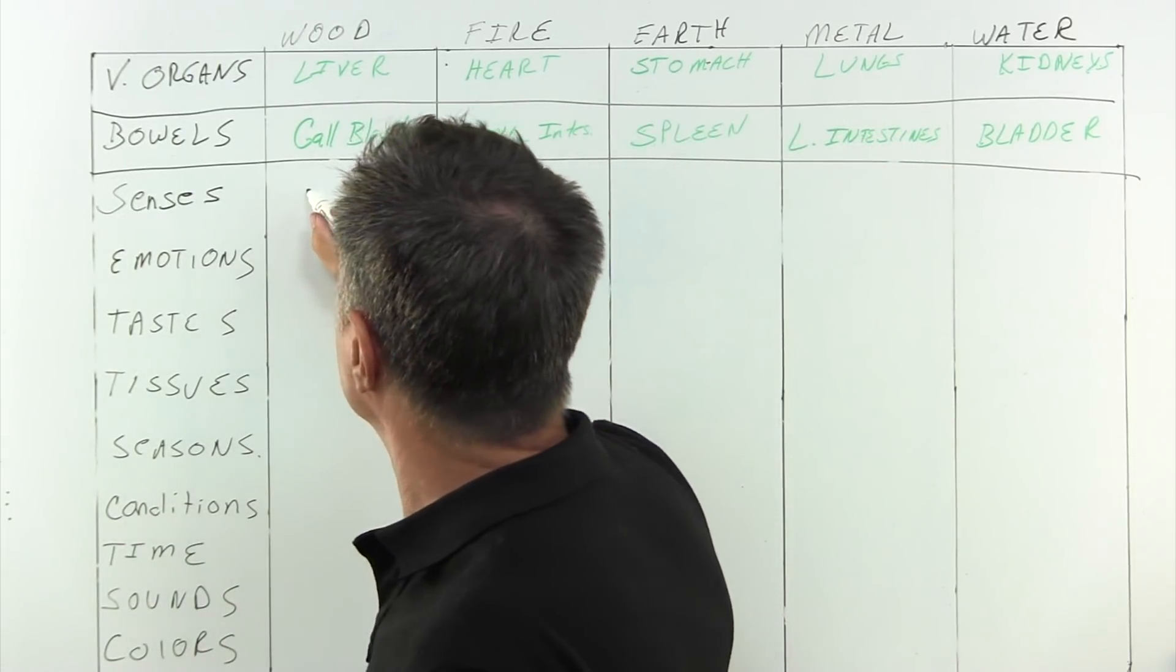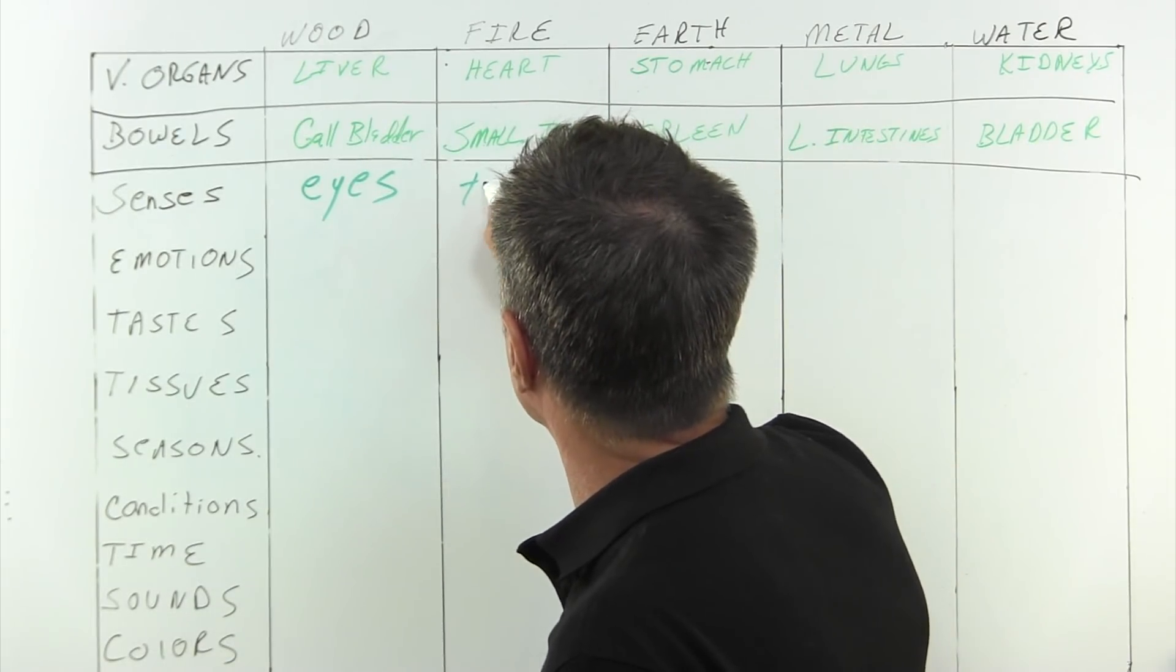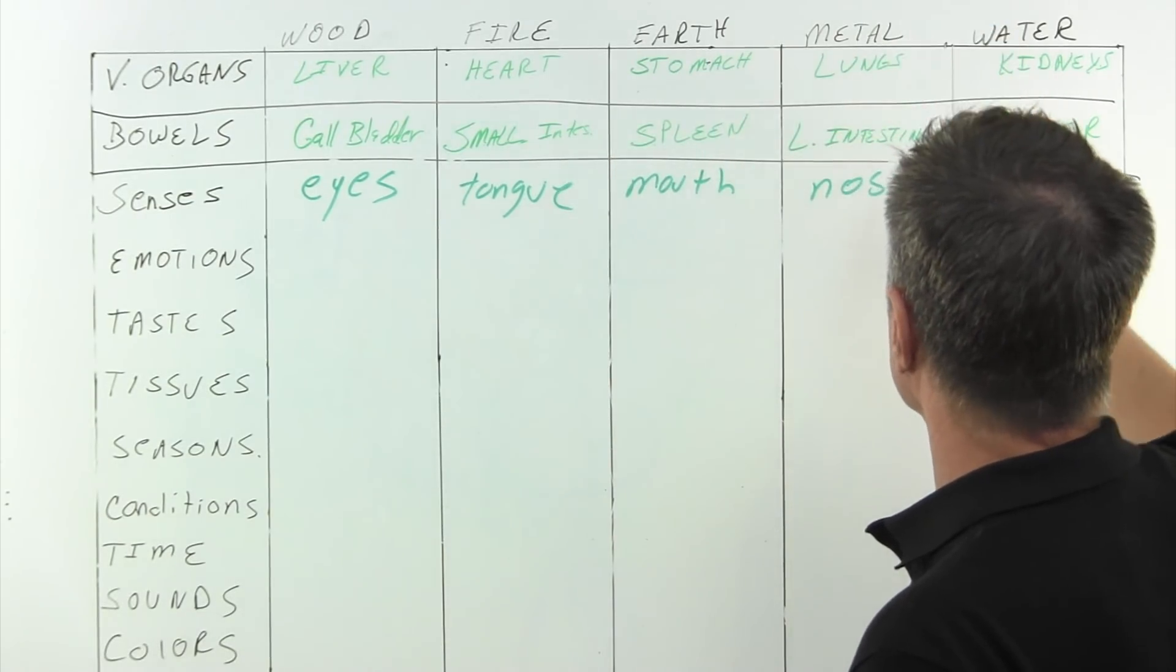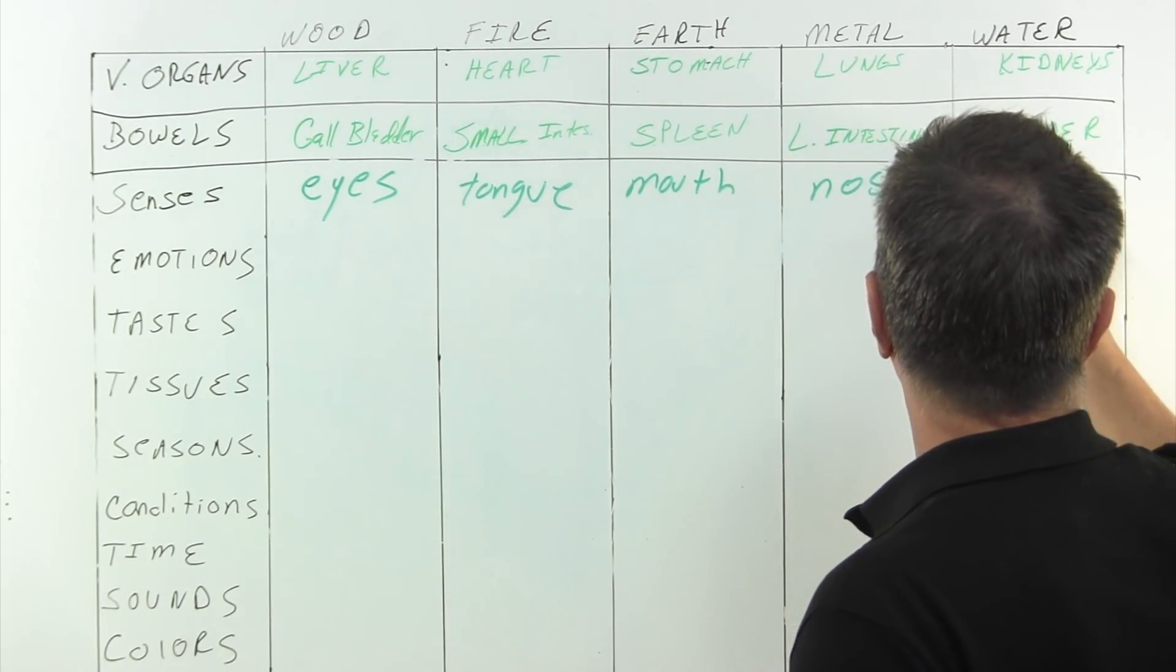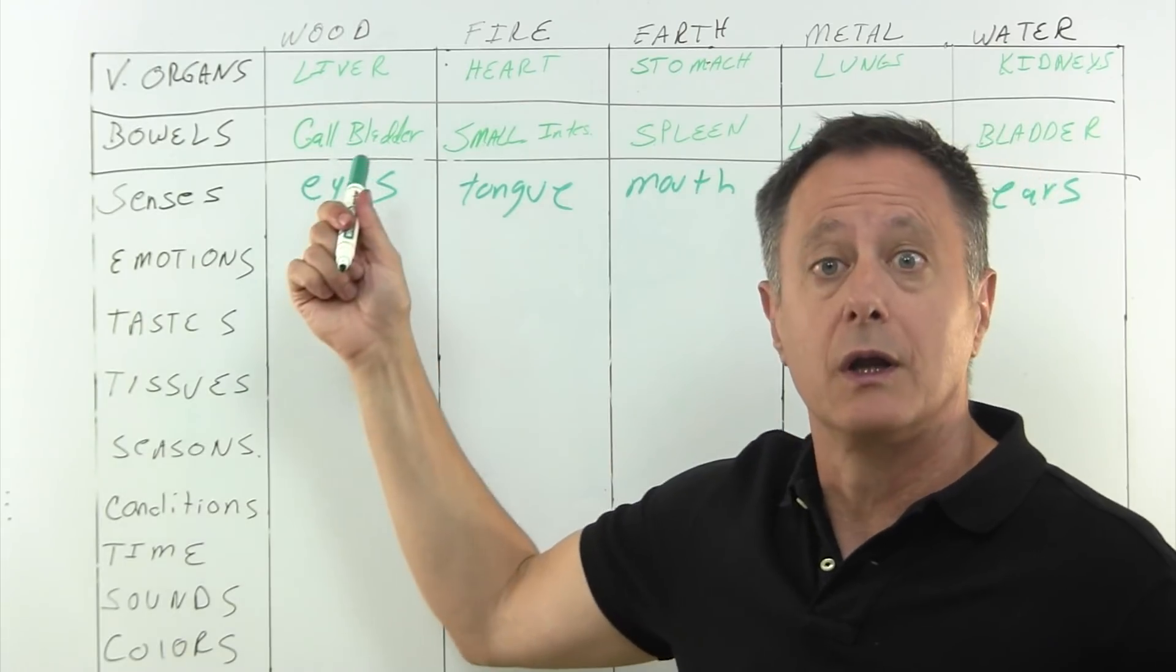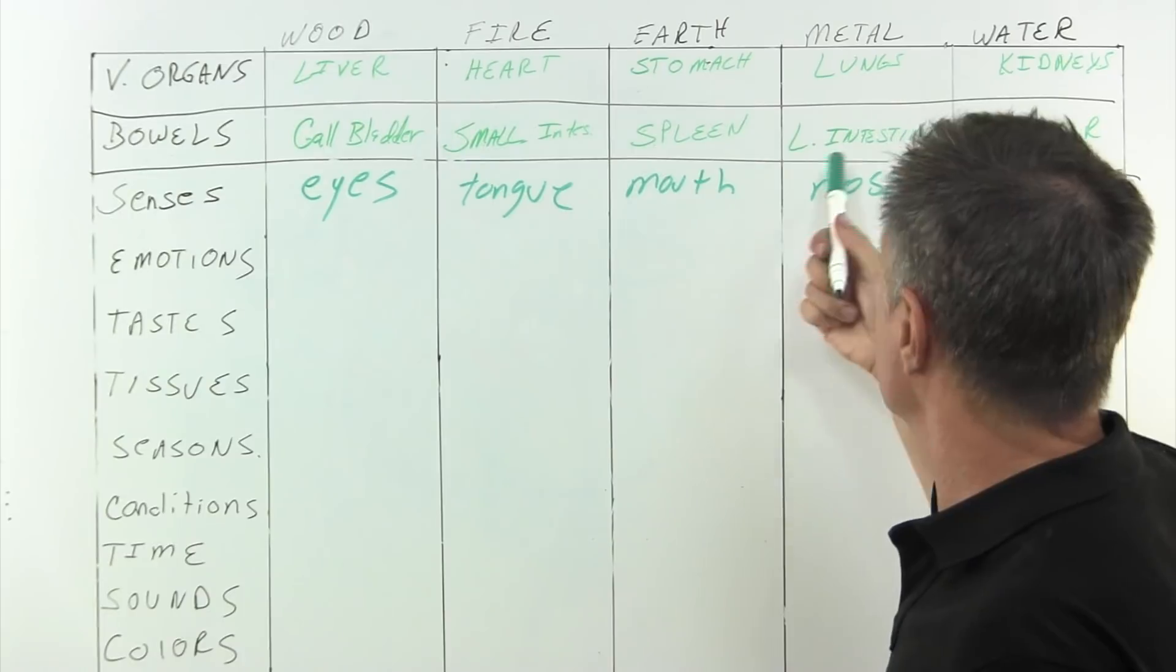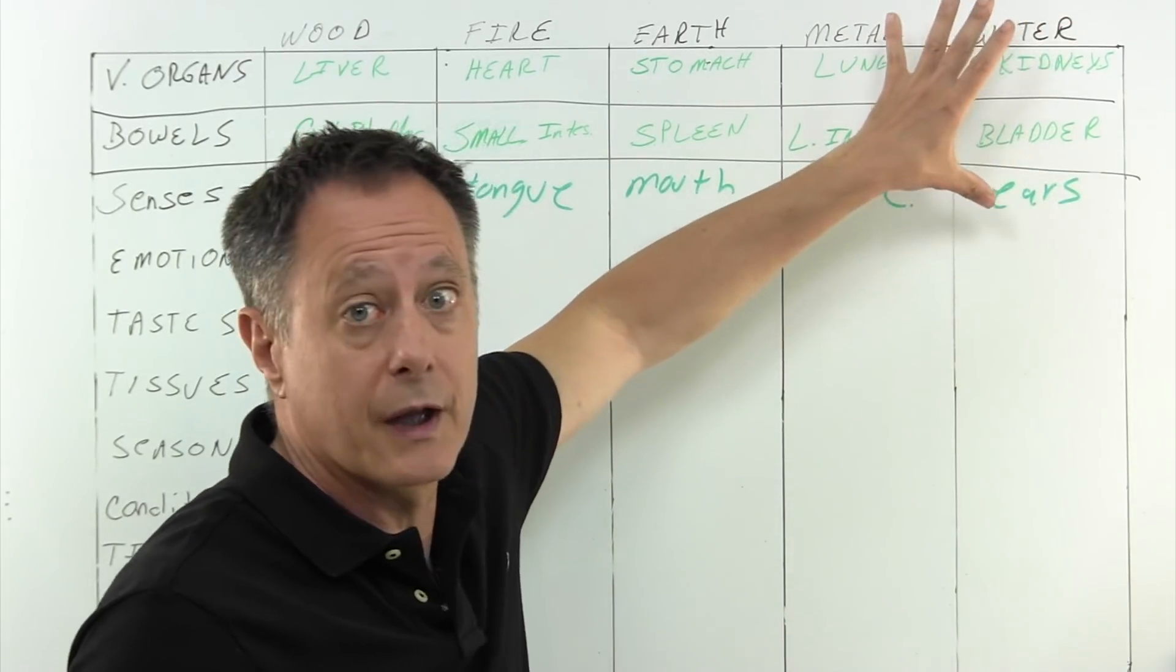Each of the sensory organs is also mapped to an element. So, for example, the element of wood is mapped to your eyes and fire is mapped to the tongue and earth is mapped to the mouth as a whole. Metal is the nose, logically enough, right? There are lung things, and you're breathing, so you're going to smell things. And water is mapped to the ears. So, a clinician might say, you know, gee, are you having trouble with your vision? And that would give him or her a clue that they need to look at the wood element for possible treatment opportunities.